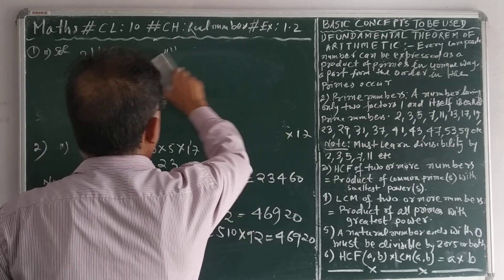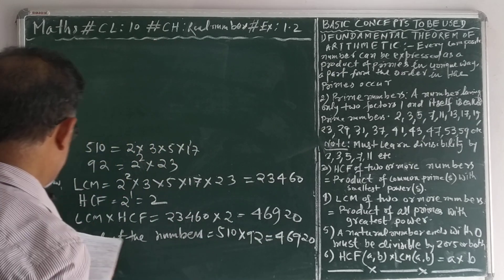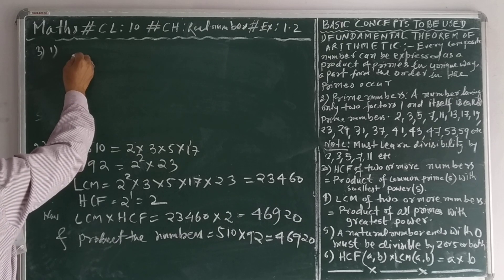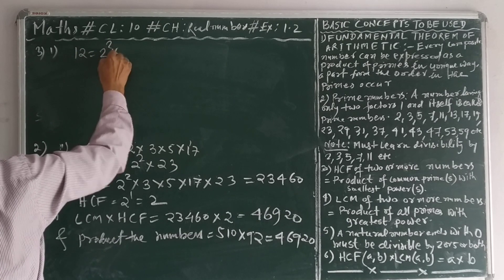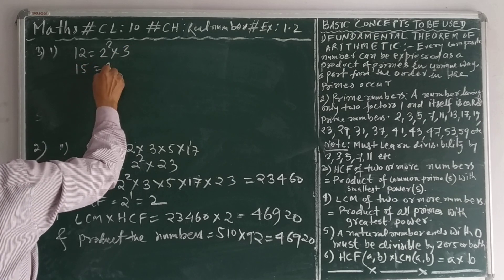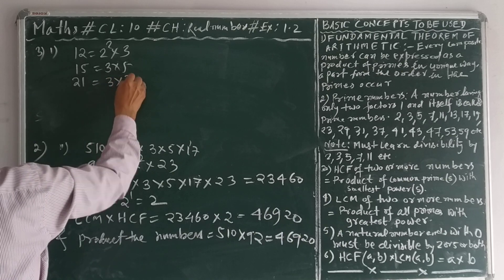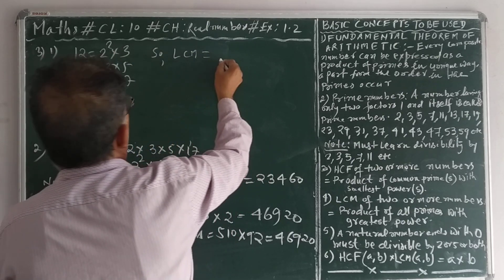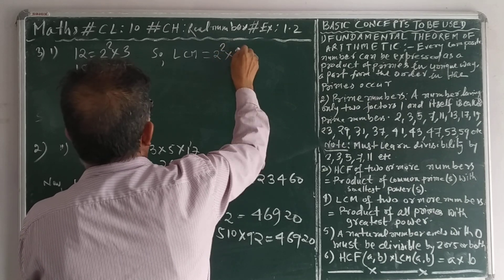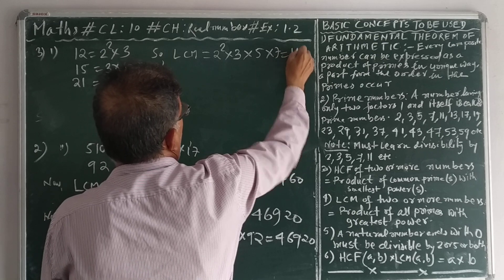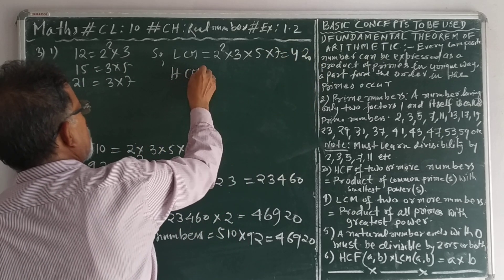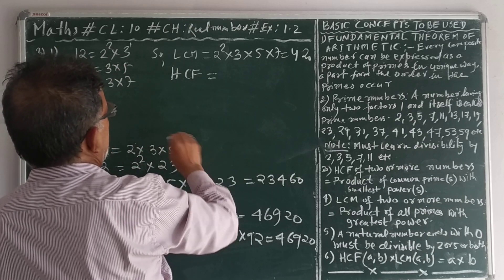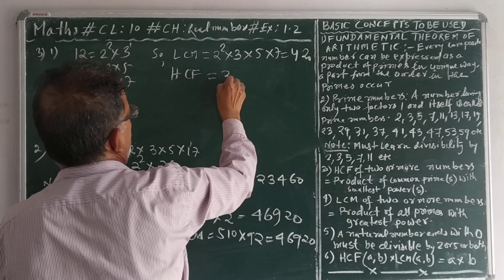Question number 3(i): We have to find LCM and HCF by prime factorization method. 12 is equal to 2 to the power 2 into 3; 15 is equal to 3 into 5; 21 is equal to 3 into 7. So LCM is equal to the product of all primes with the highest power: 2 to the power 2 into 3 into 5 into 7, which equals 420. And HCF is equal to 3, since 3 is the common prime to all three numbers with lowest power 1, so 3 to the power 1 equals 3.